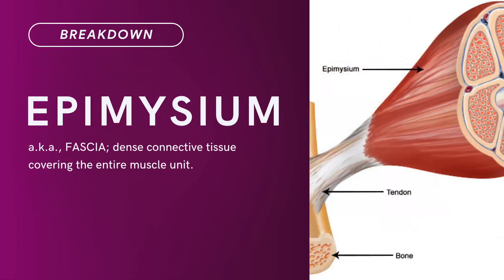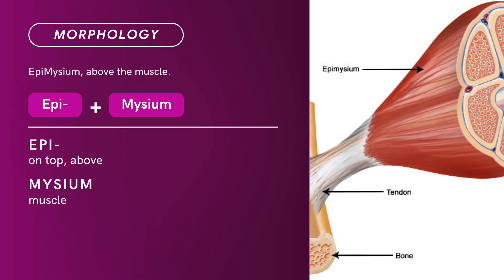Compound Term: Epimysium. Brief definition — also known as fascia, dense connective tissue covering the entire muscle unit. Term Morphology: It's a compound of Epi plus mysium, meaning above the muscle. Epi means on top, above. Mysium means muscle. Epimysium — there you have it.